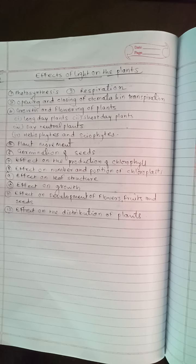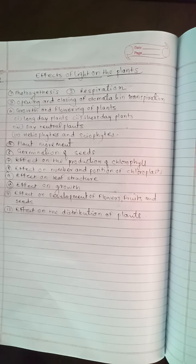The role of light on plant life may be as follows: effect of light on photosynthesis, respiration, opening and closing of stomata, and in transpiration, growth and flowering of plants, in which long-day plants, short-day plants, day-neutral plants, heliophytes, sciophytes, role of light on movement of plants, germination of seeds, effect on the production of chlorophyll, effect on number and position of chloroplasts, effect on leaf structure, effect on growth, effect on development of flowers, fruits and seeds, and lastly, the effect on the distribution of plants.